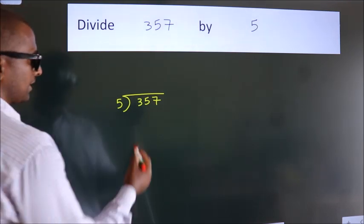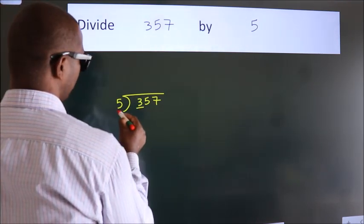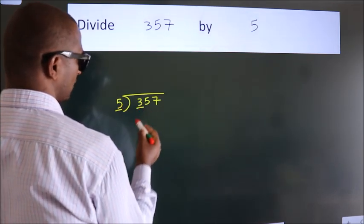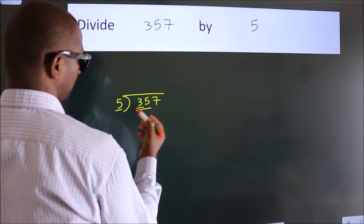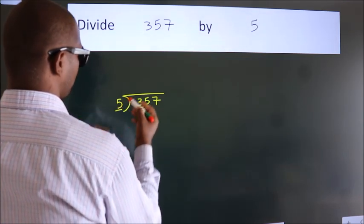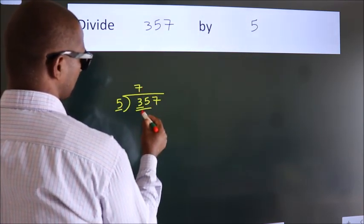Next. Here we have 3, here 5. 3 is smaller than 5. So, we should take 2 numbers: 35. When do we get 35? In the 5 table. 5 times 7 is 35.